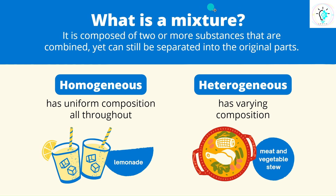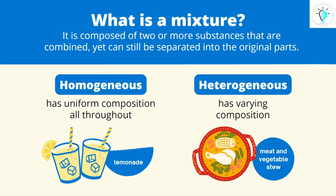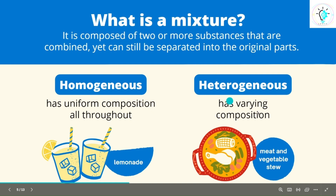Let us talk about a mixture. A mixture is composed of two or more substances that are combined but can be separated into its original parts. A mixture can be broadly classified into homogeneous mixture or heterogeneous mixture. A homogeneous mixture has a uniform composition throughout — for example, lemonade, where the different components cannot be seen separately. A heterogeneous mixture has varying composition, with different amounts of each component.